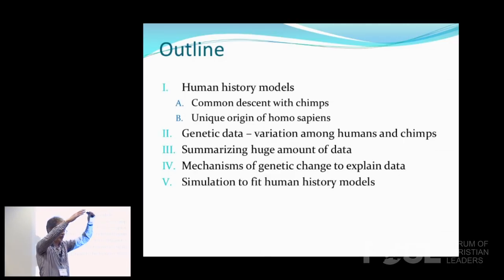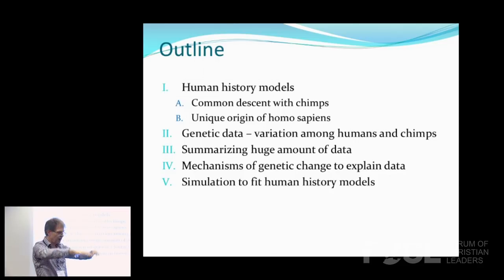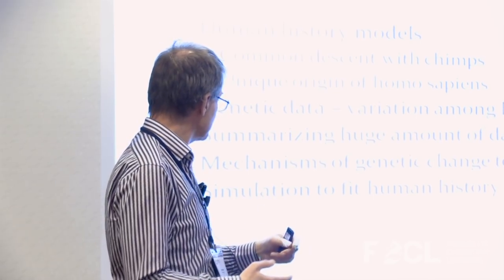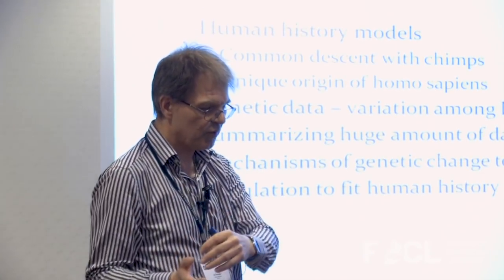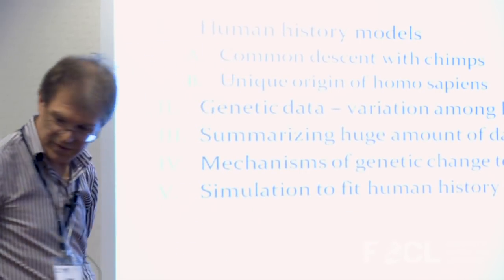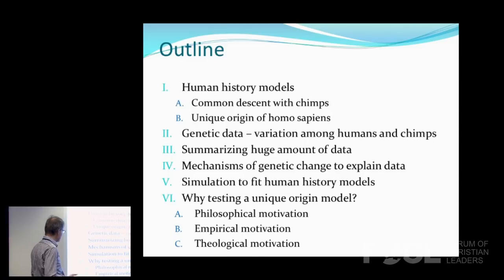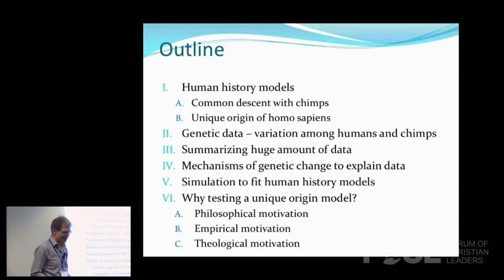If we have a human history model starting from Adam and Eve, we simulate the genomes of Adam and Eve — since we don't have genetic data from them — and then it evolves over time using the mechanisms of change: mutations, natural selection, and everything else up to the present generation when we have data. We then check how well the simulated data fits the observed data using summarizing statistics. We simulate a number of times, and the best human history model has the best fit between observed and simulated data. At the end I will give a philosophical, empirical, and theological motivation for why we should test the unique origin model.